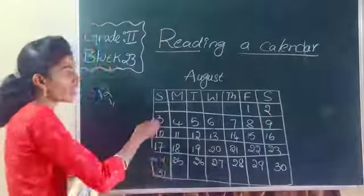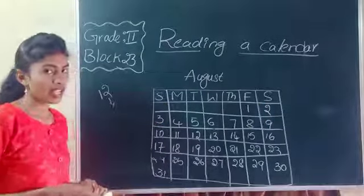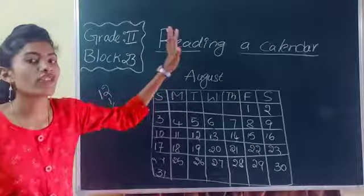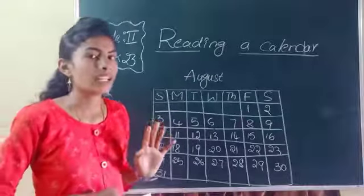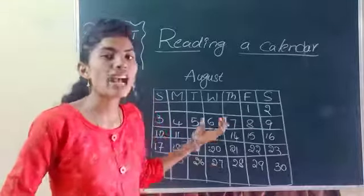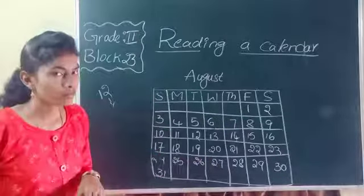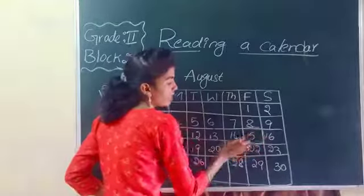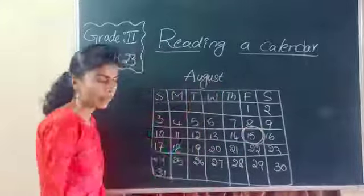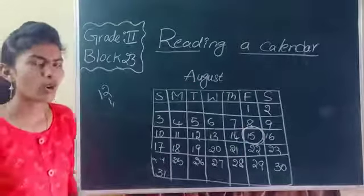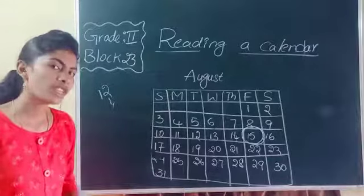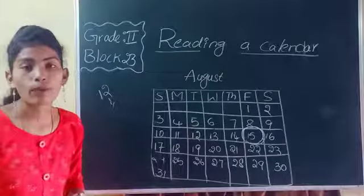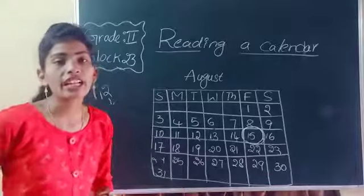So here I have an August calendar children. Can anyone guess what is the special day or festival we have in August? We have August 15th. What is it children? What we have on August 15th is Independence Day.